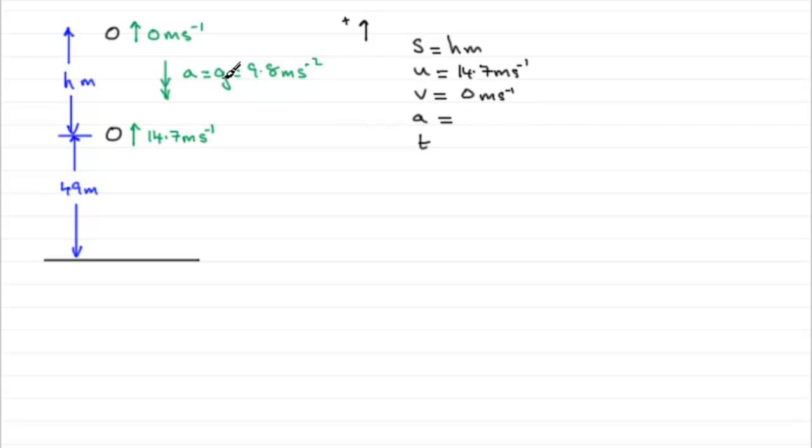And as for A, this is where you've got to be careful because it's acting in the opposite direction to the positive sense so the acceleration will be minus 9.8 metres per second per second.